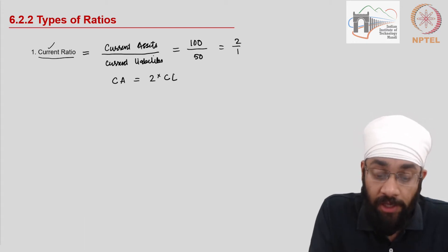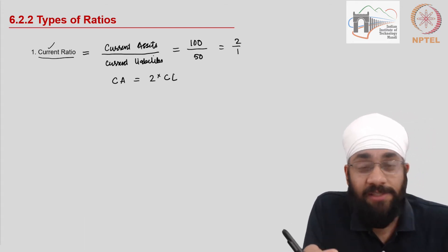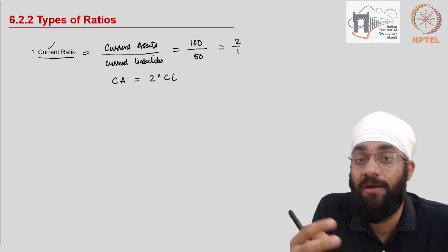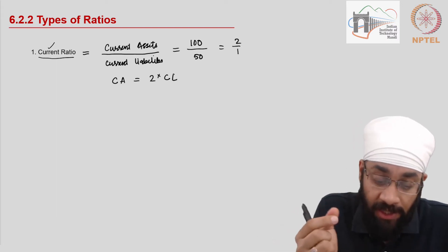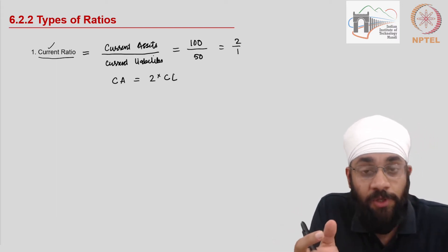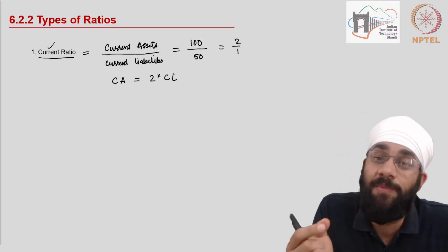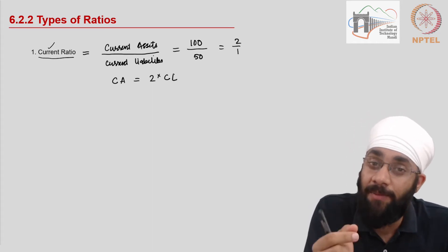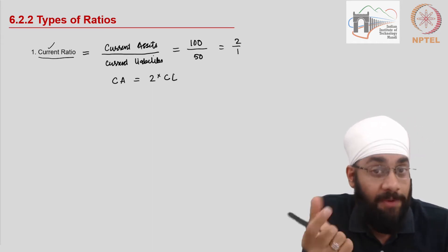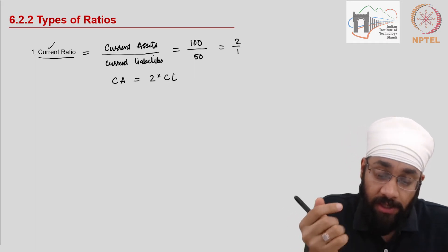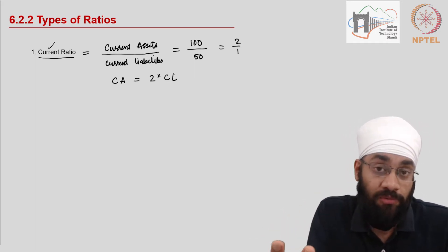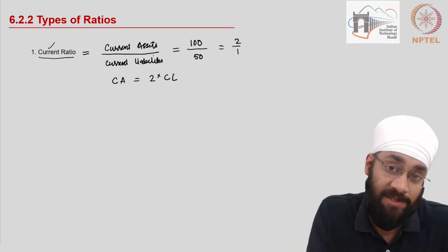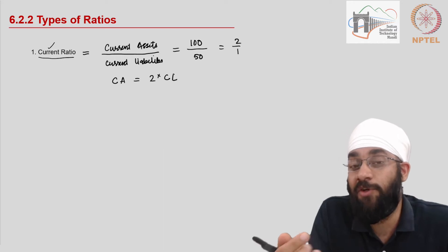A current ratio of 2:1 means current assets are two times the current liabilities. Even if some of the current assets fail to convert into cash, you will still have the money to pay the current liabilities. You have a good cushion — you can fail to recover 50% of your current assets and still be able to pay off your current liabilities. The higher this ratio, the better it is for the business, because more cushion is available.